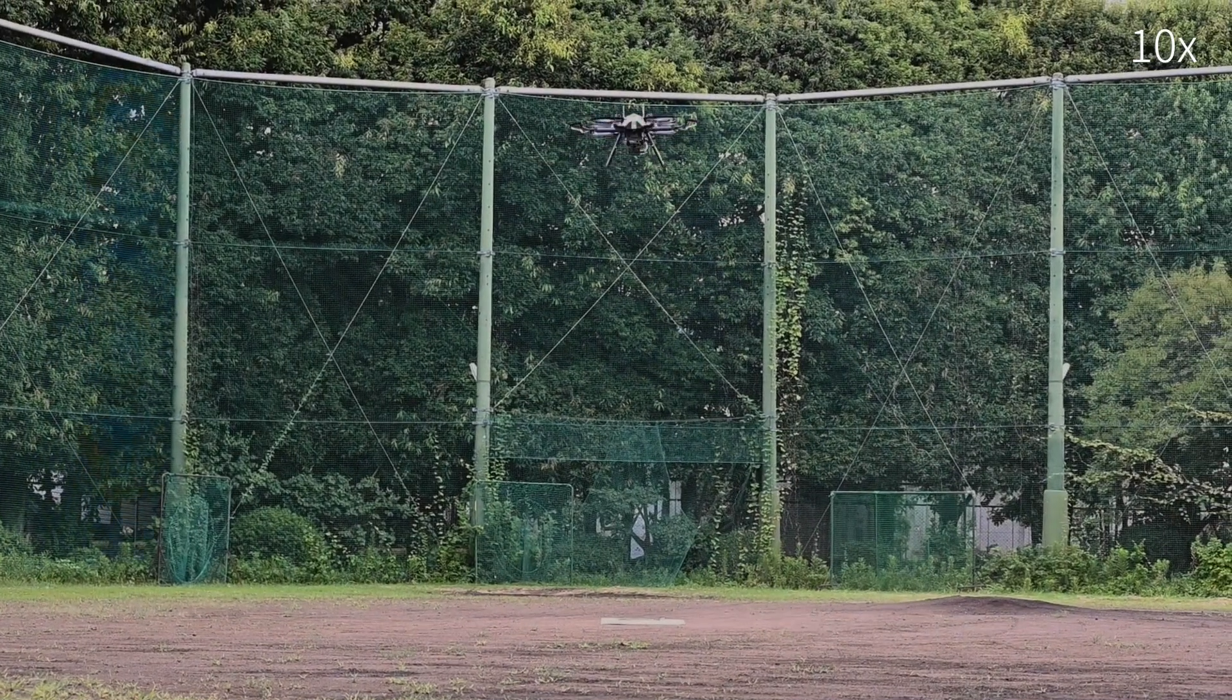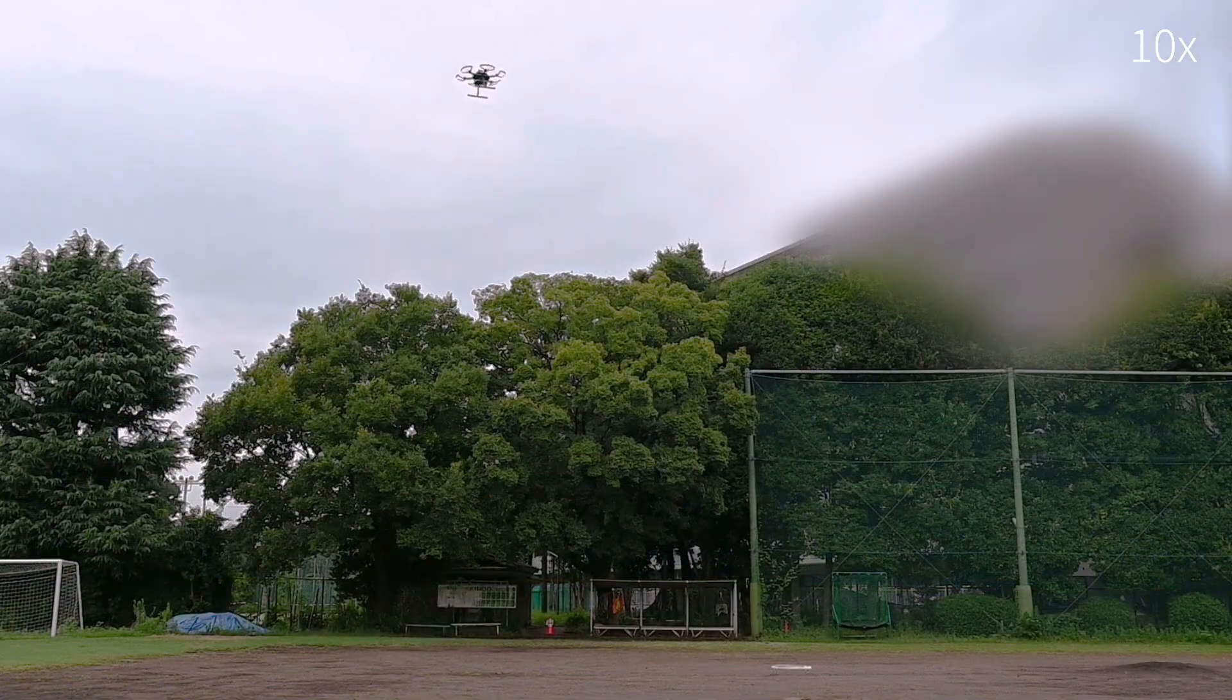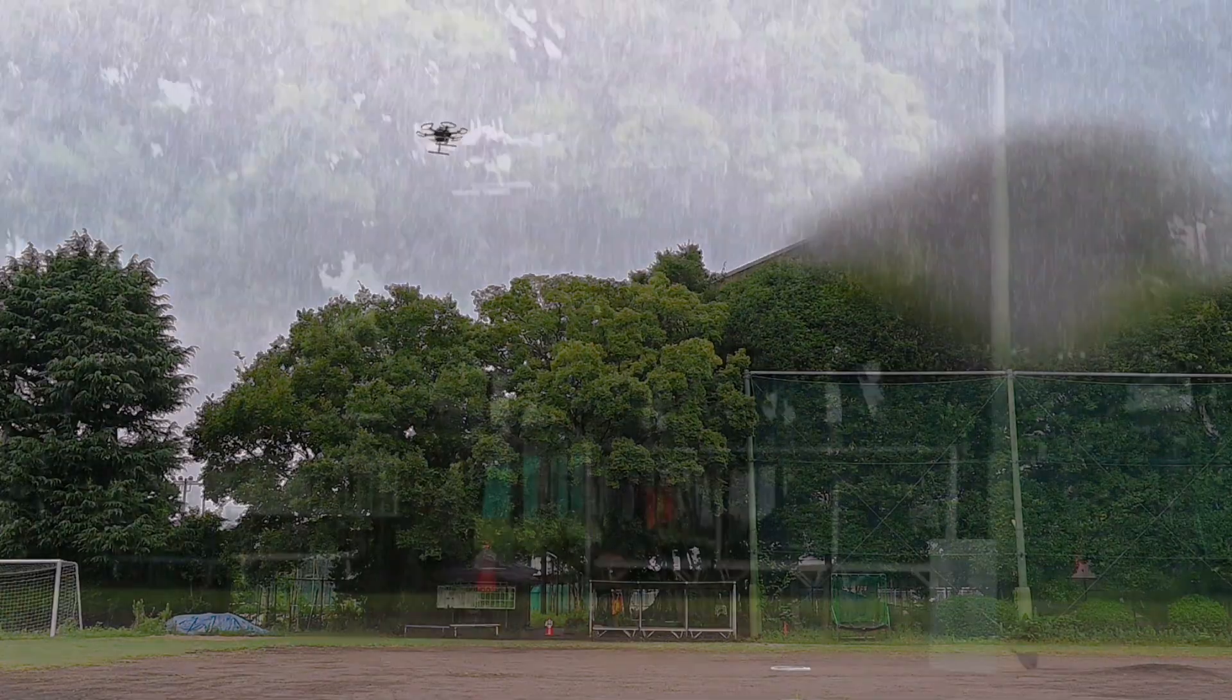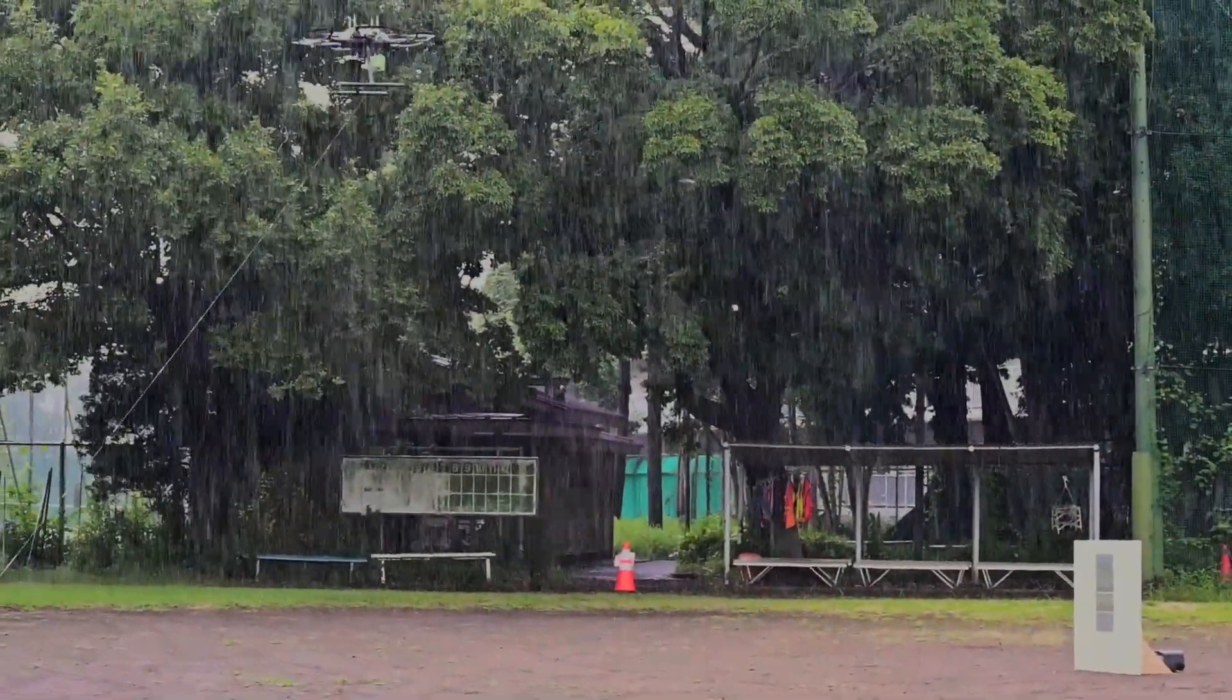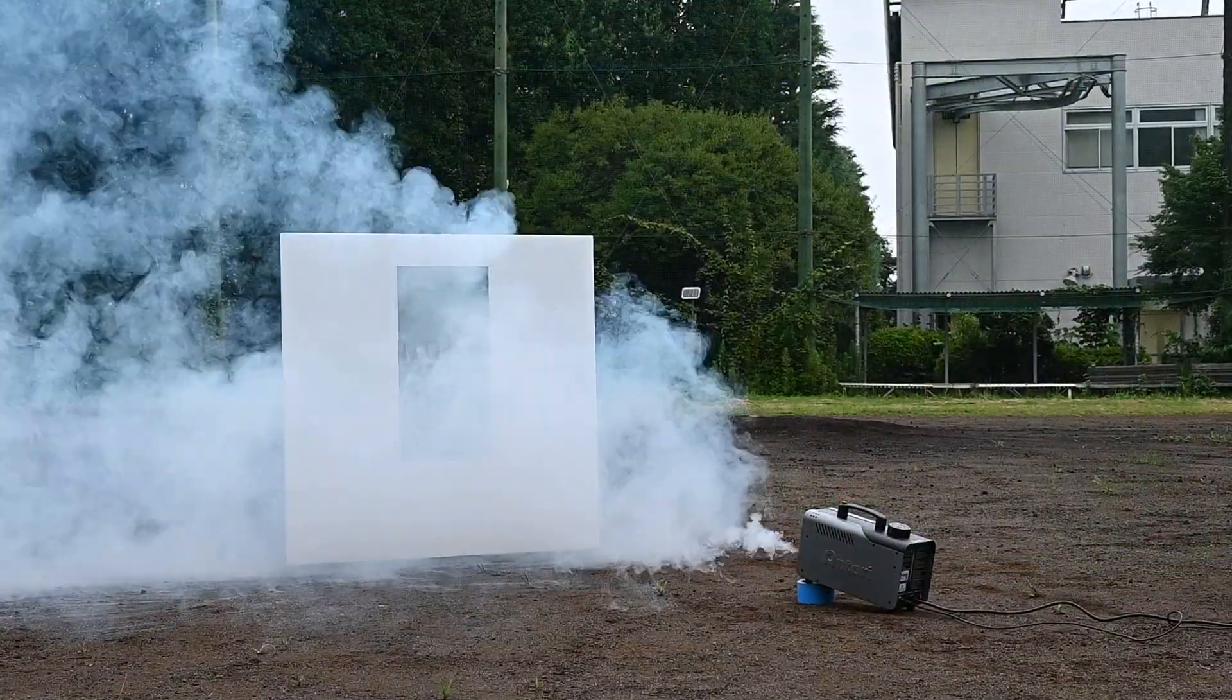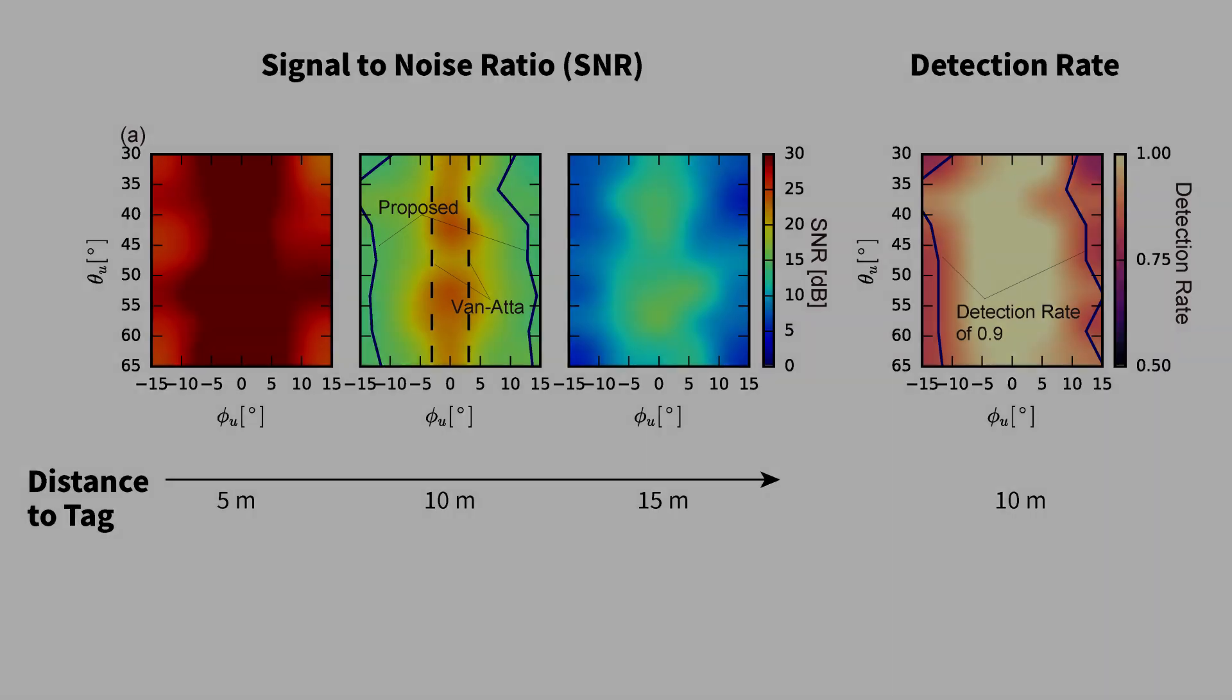In order to validate that MilliSign has a wide read range, we performed readout measurements in various positions of the UAV. We also evaluated the performance under poor visibility conditions such as rain and fog. As a result, it was found that MilliSign can be read over a wider 3D range than conventional methods.